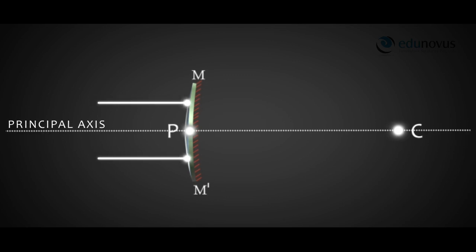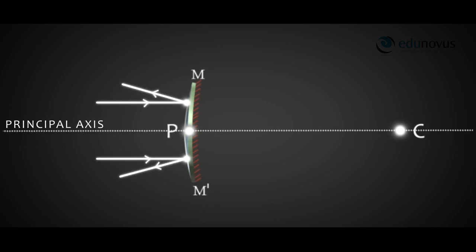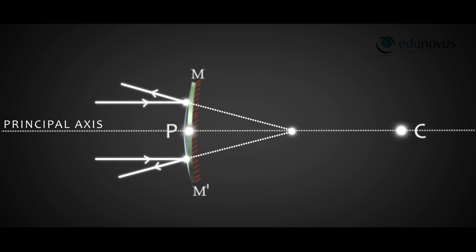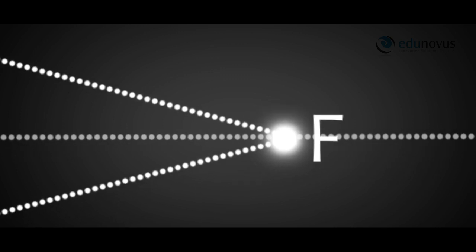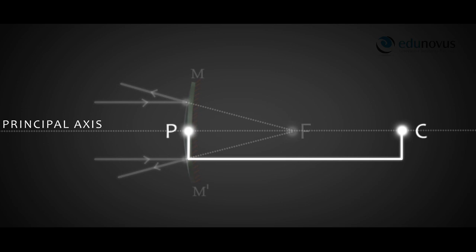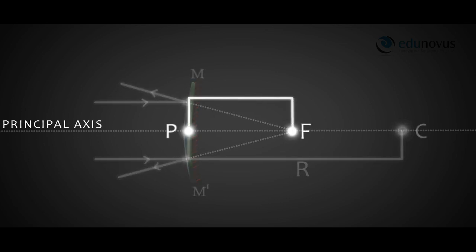If the incident rays on the mirror are parallel to the principal axis, then after reflection they diverge outwards. But they appear to be coming from the convex mirror. If you extend the reflected rays backward, they meet at a point on the principal axis. This point is called the principal focus, denoted by F. The distance between pole P and center of curvature C is called the radius of curvature, denoted by R. The distance between pole P and principal focus F is called the focal length of the mirror, denoted by f.